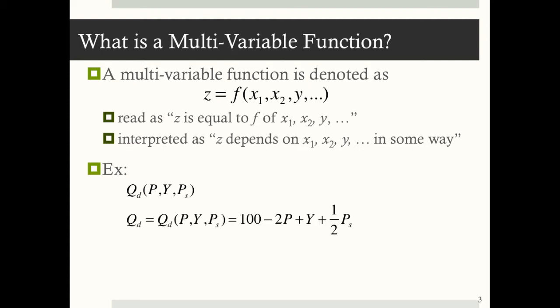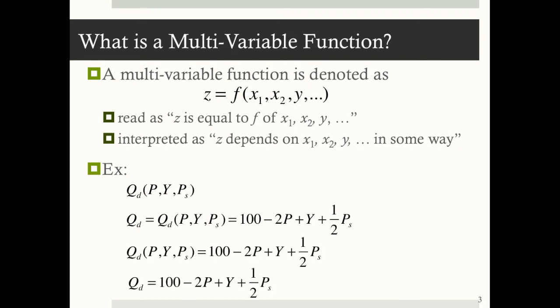You may see it written in a variety of ways. The first equation is a general functional notation — it's just telling us that quantity demanded depends on these three variables in some way. The remaining examples give us specifics: they tell us specifically how price, income, and ps — the price of a substitute good — affects quantity demanded.